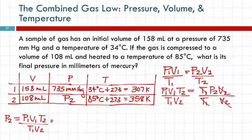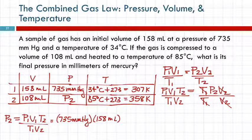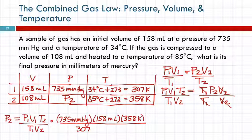So now I'm going to copy this down carefully. P2 equals P1V1T2 over T1V2. And now I'm going to go to my table, and I'm going to find these values and put them into the equation. So, pressure 1 is 735 millimeters of mercury. Write the units in here. Volume 1, 158 milliliters. Temperature 2 is 358 Kelvin. And that's divided by T1, 307 Kelvin, and V2, 108 milliliters.